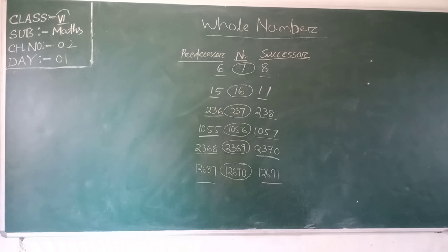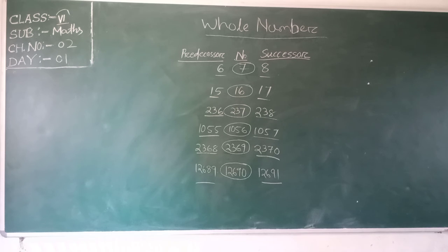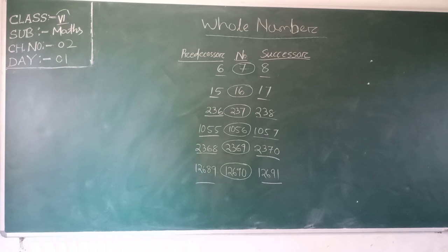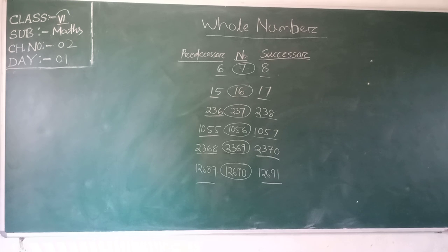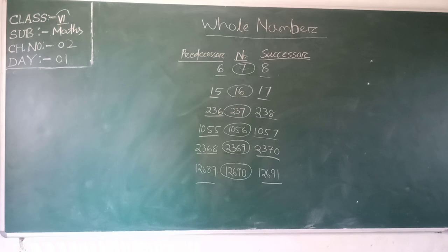The number 12,619: its predecessor means minus 1, so the before number of 12,619 is 12,618. And the successor of 12,619 means the after number, that is 12,619 plus 1 equals 12,620.